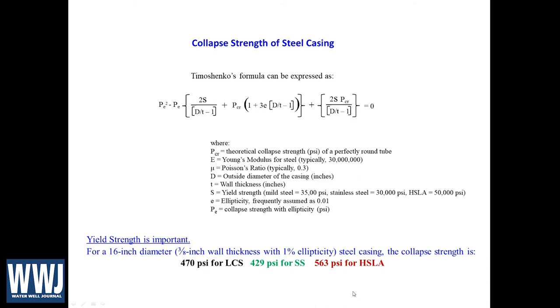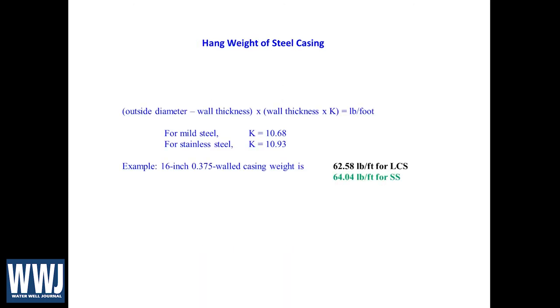Another thing to consider is the weight. So we have a drilling rig of a certain mass capacity and we want to be sure that our string weight does not push the limits of that. So there's a simple way to calculate this. Of course you can get this from suppliers as well—what is the weight, the pounds per linear foot? If you don't have that readily available, all you have to do is say the outside diameter minus the wall thickness, that value times the wall thickness times a variable k. If it's mild steel you plug in 10.68, if it's stainless steel you plug in 10.93, and that'll tell you the pounds per foot. So if we have our same example casing, we'll see that for low carbon steel it's a little less weight—it's 62.58 pounds per linear foot—and it's a little heavier if it's stainless steel.